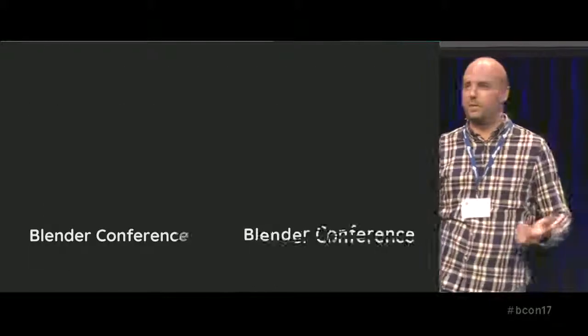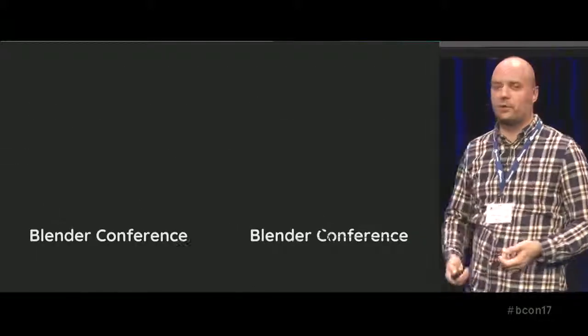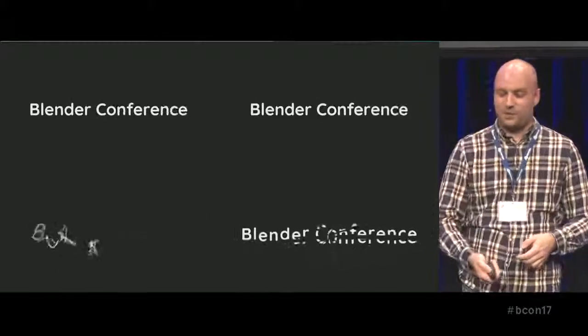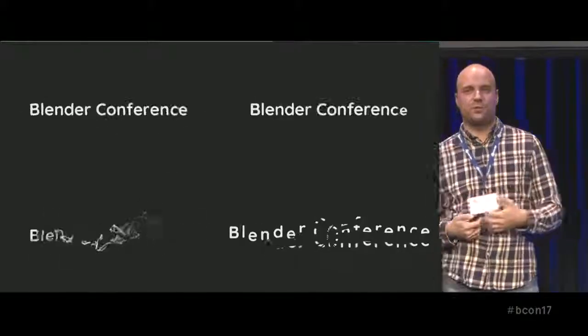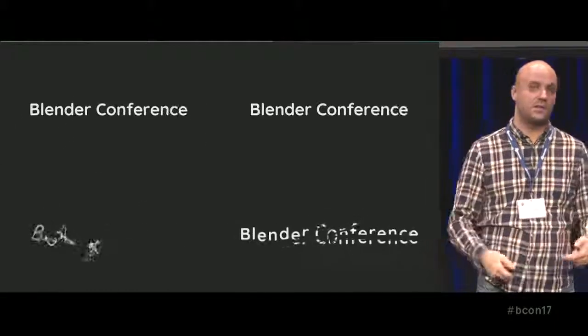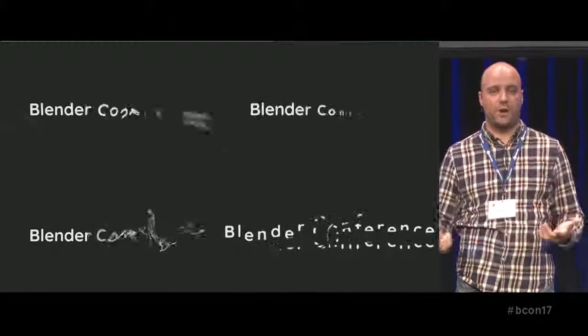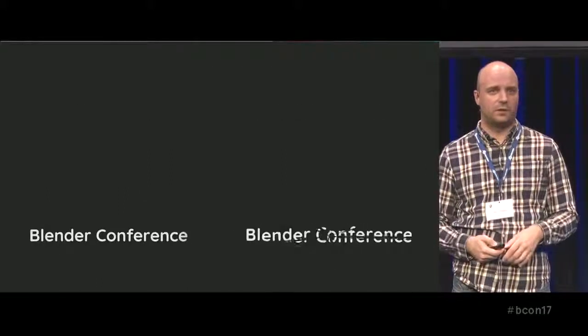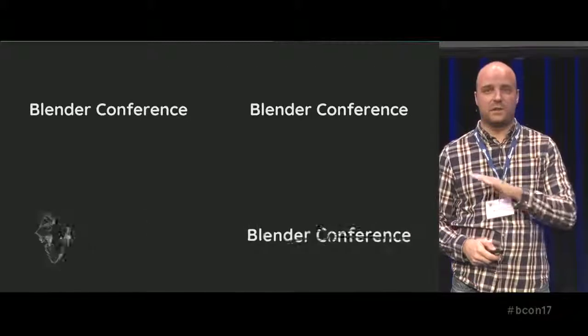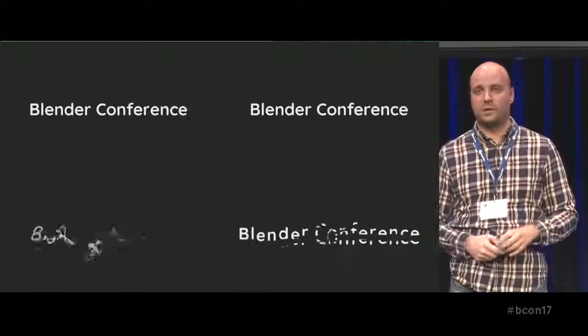We need to do more — like emitting particles from text, for example. In the Animation Nodes examples, to do that I had to convert text to mesh. Text needs to be non-destructive: we should be able to do something awesome with it and still go back and change the text. This matters for everyone — imagine finalizing a client video and they ask to change just one line of text.